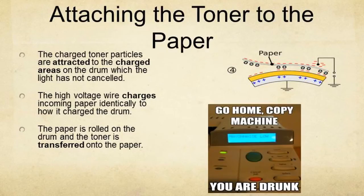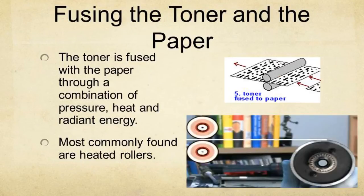Attaching the toner to the paper: the toner particles are attracted to areas on the drum that the light has not cancelled while exposing the original document. Then the high voltage wire charges fresh paper, similarly to how it previously charged the drum. Finally, the paper is rolled onto the drum and the toner moves from the drum onto the paper. To fully fuse the toner and the paper, they undergo a combination of heat, pressure, and radiant energy. Most commonly used are heat rollers.